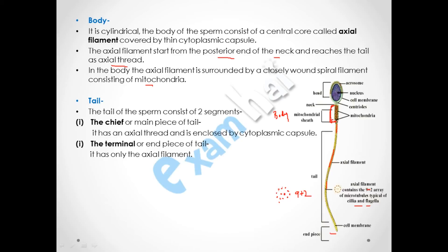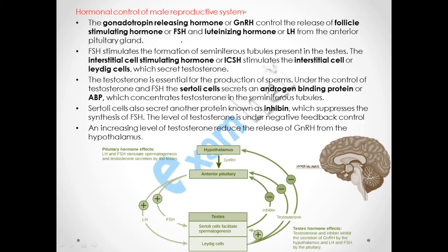The tail has two parts: the main segment (chief piece) and the end piece. The chief piece has the axial filament covered with a cytoplasmic capsule. In the end piece of the tail, only the axial filament is present with no cytoplasmic capsule.